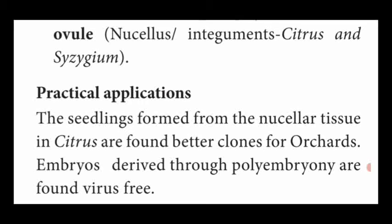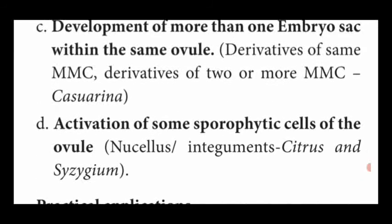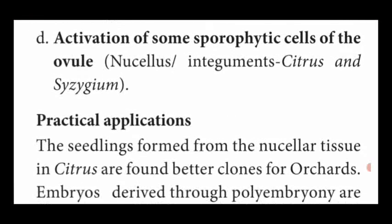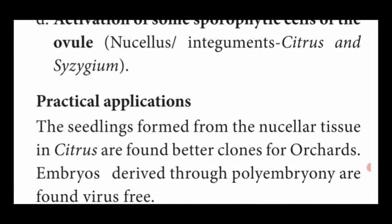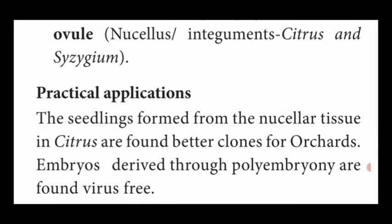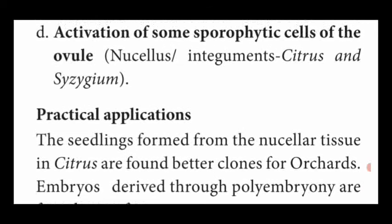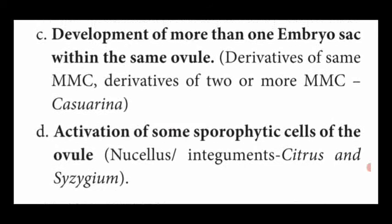Polyembryony - I hope you have all understood. What is polyembryony? Occurrence of more than one embryo within the seed is called polyembryony. The term polyembryony was first introduced by Antony van Leeuwenhoek in orange seeds. Polyembryony is divided into four types: first one is cleavage polyembryony; another is embryos produced from embryo sac other than egg (synergids, antipodal cells, endosperm); third is more than one embryo sac within the same ovule from derivatives of megaspore mother cell; fourth is some sporophytic cells producing embryo from nucellus or integument.